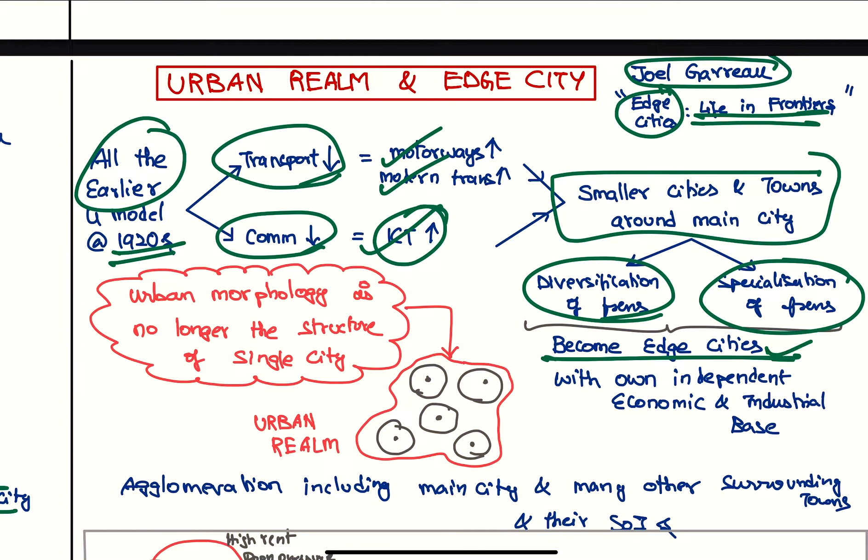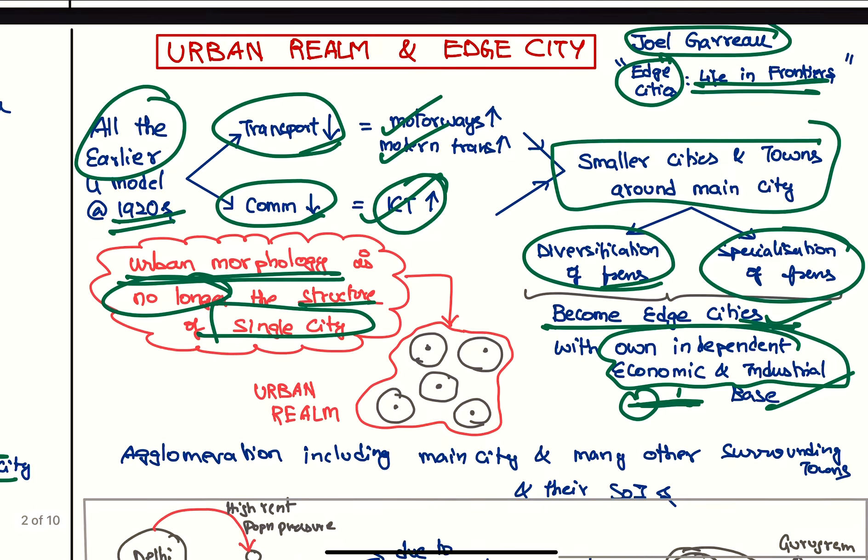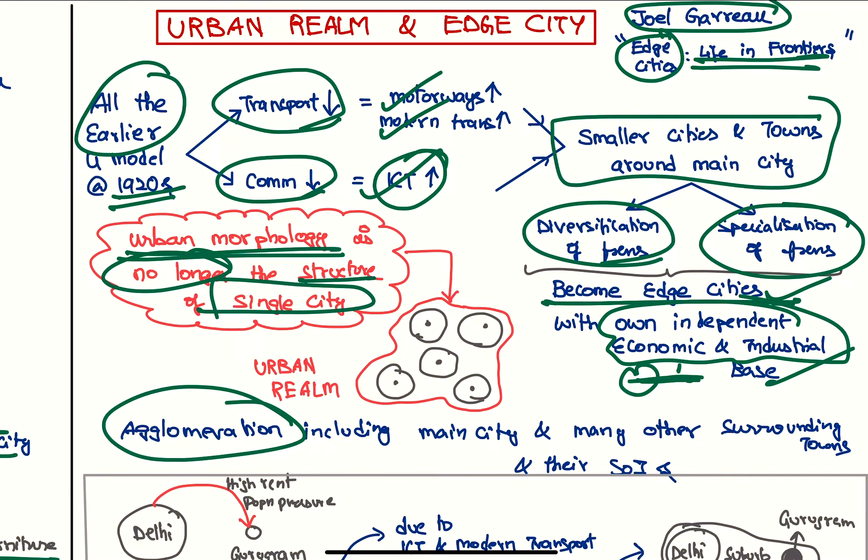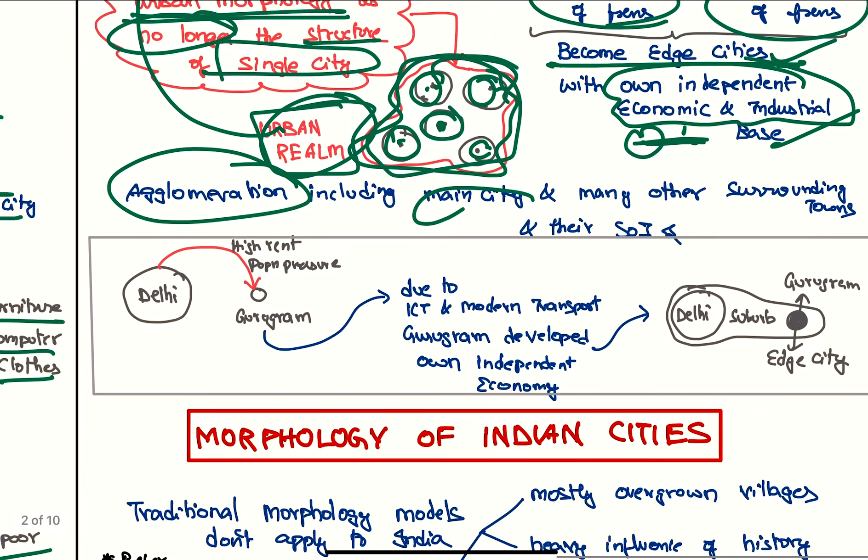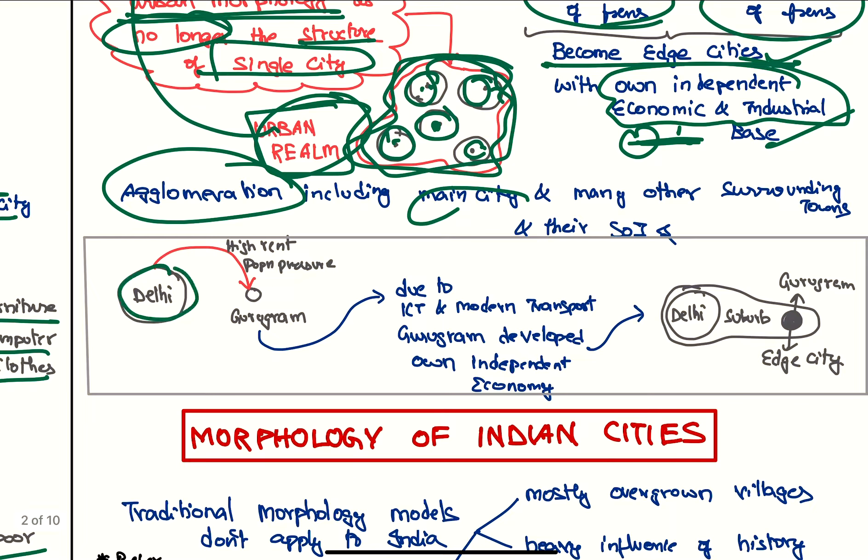Basically, these edge cities have their own independent economic and industrial base. Therefore, they are no longer completely dependent on the main city. The new urban morphology is no longer about studying the structure of a single city. Rather, it is about studying the agglomeration with the main city. This is the main city and these are the edge cities. Also, the sphere of influence of the cities should all be studied together. All this together will be called as the urban realm. Initially we studied only about this dot, now we are studying this complete thing.